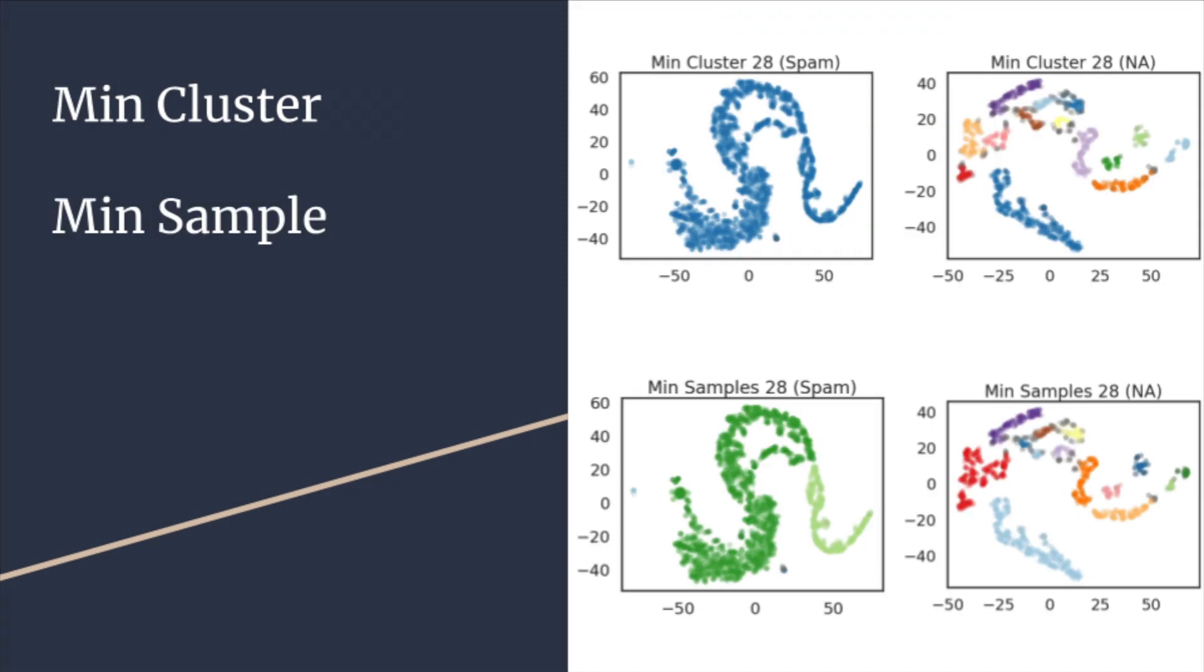Another two fairly important graphs that we should look at here are the min-cluster and min-sample. These are adjusting for parameters that we are sending into the HDBScan function when we're declaring it. This is something that you can adjust by sending in a simple integer value.